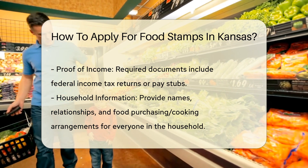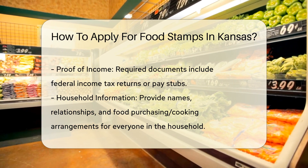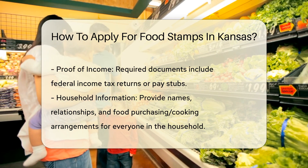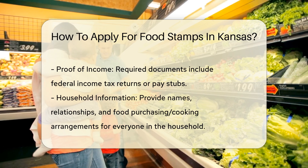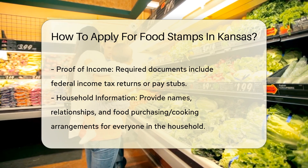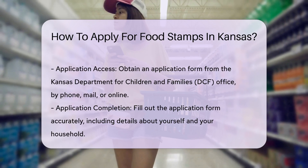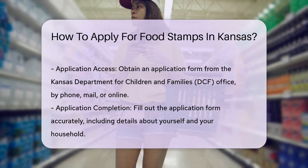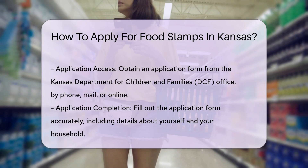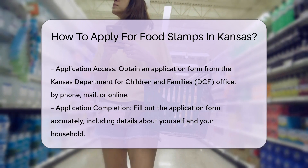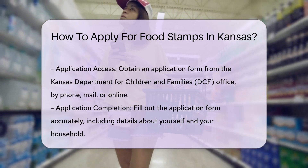Step 3: Obtain an application. You can get an application form in several ways: in person from the Kansas Department for Children and Families DCF office, over the phone by calling the DCF office, by mail by requesting an application form, or by downloading the application from their website.